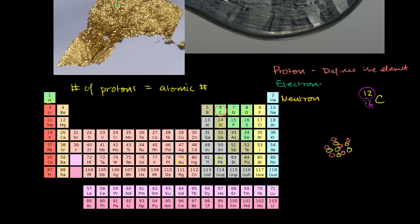So at the center of a carbon atom, we have this nucleus. Carbon-12 has six protons and six neutrons. Another version, carbon-14, still has six protons but then would have eight neutrons. So the number of neutrons can change, but this is carbon-12.